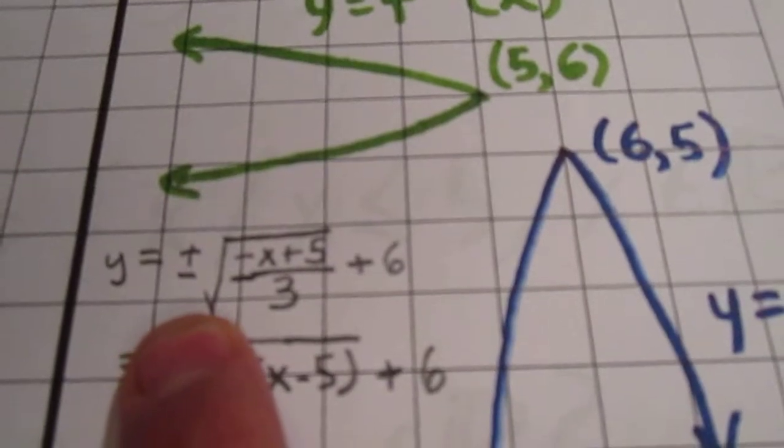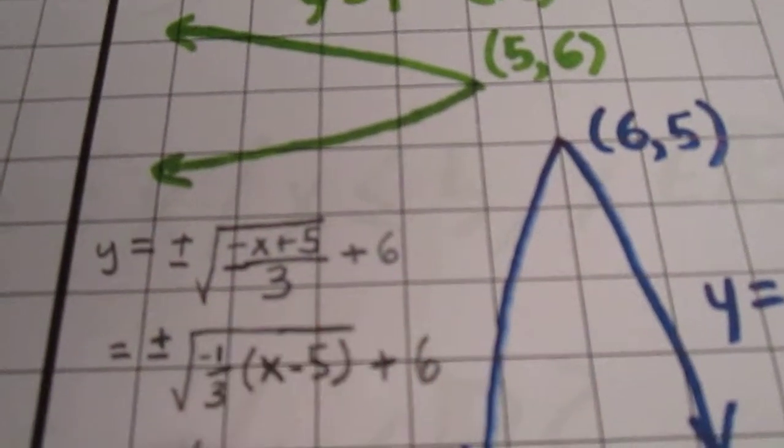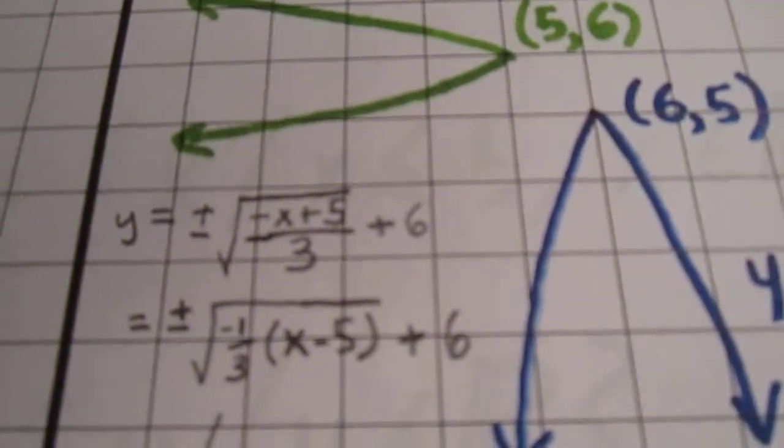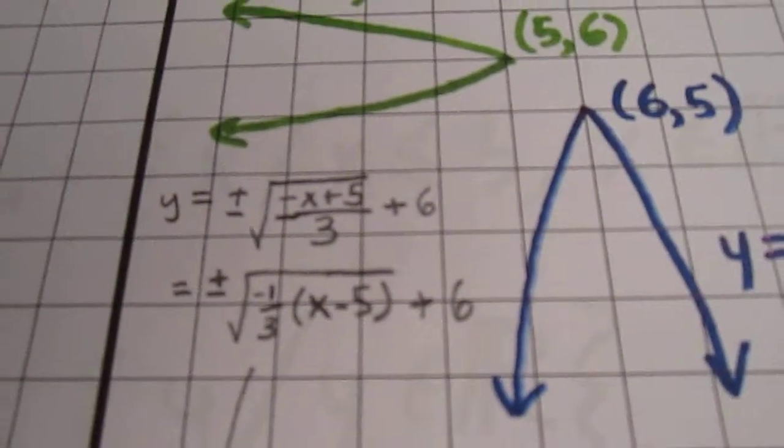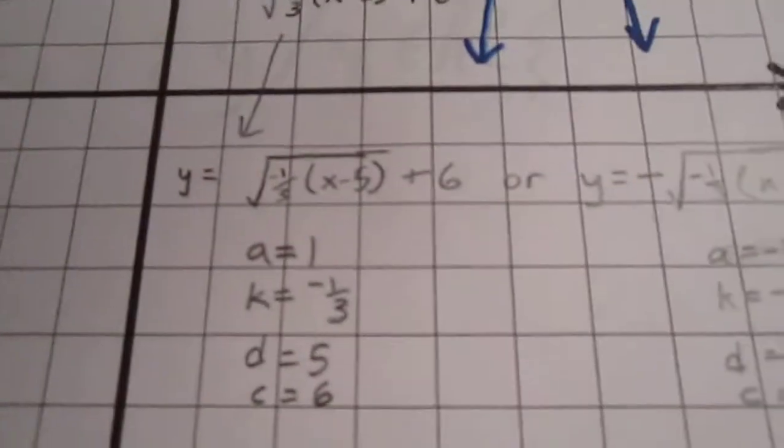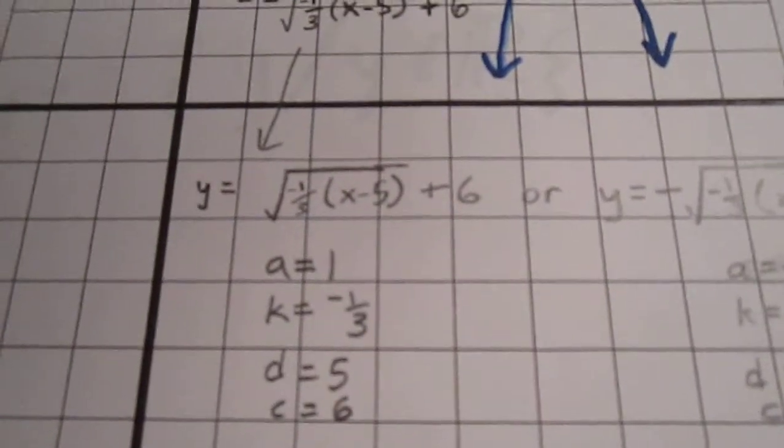We can simply recall our work with transformations, factor out negative 1 third, and realize that what we really have there are two different curves, one of them with an a value of positive 1, and one of them with an a value of negative 1.